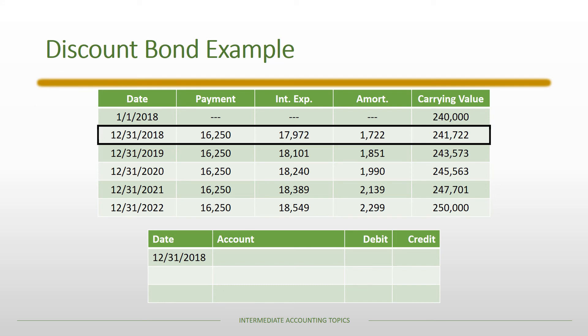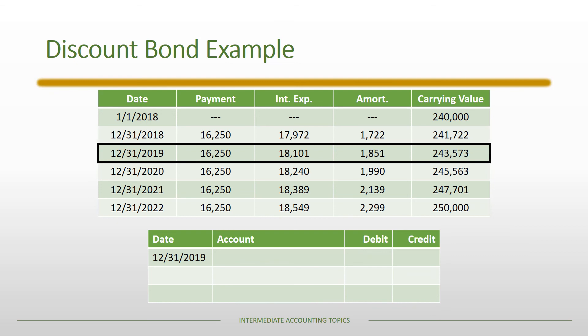Using the amortization table, we generate our journal entries. For 12/31/2018: cash payment is $16,250 (credit), amortization of the discount is a credit, and interest expense is the debit. Conceptually, the amortization of the discount plus the cash payment together give us the interest expense.